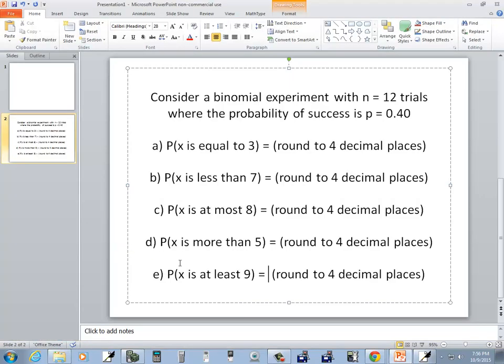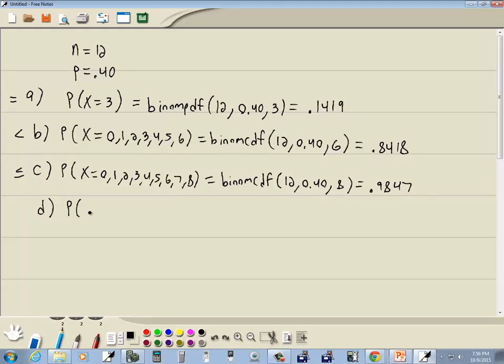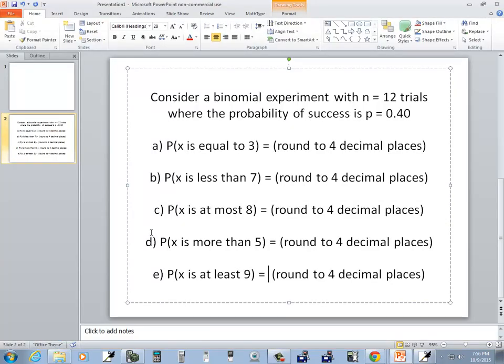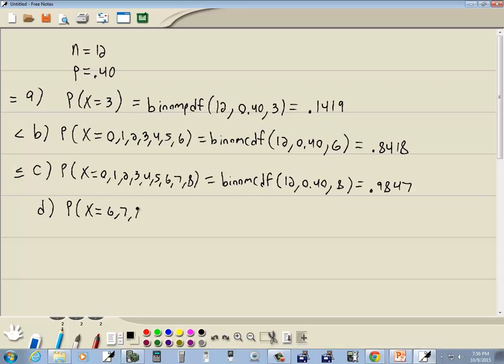Part d is more than 5. Let's write down what that means. More than 5 does not include 5, so that's 6, 7, 8, 9, 10, 11, and 12. This is the greater than case. BinomCDF will not work here because binomCDF has to go from 0 up to a number. This is going from a number to the end.